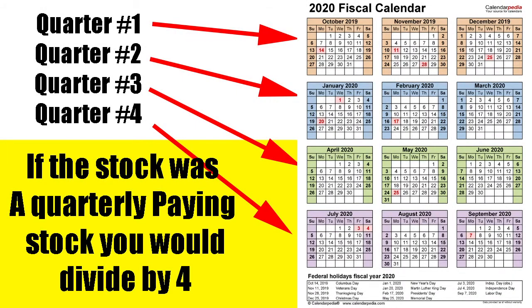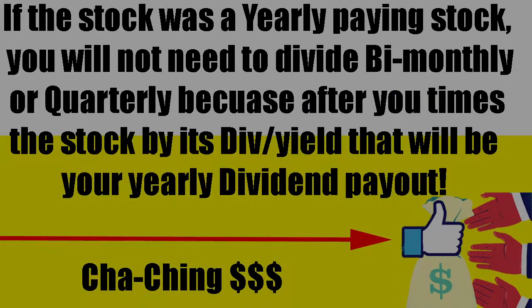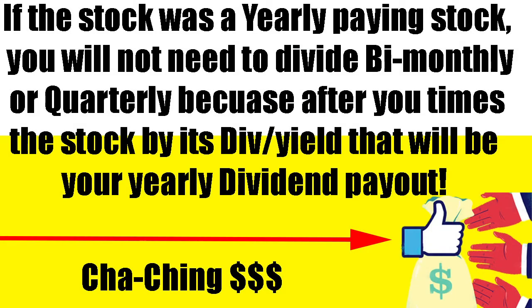If it was a quarterly paying stock, you would divide by four and get paid every three months. And if it was yearly, you'd only get paid that amount once a year.